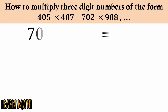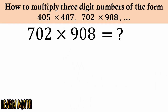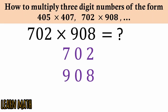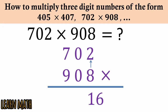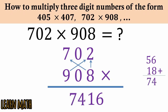The third example is 702 multiplied by 908: 8 into 2 is 16, then 7 into 8 is 56 and 9 into 2 is 18, giving 74. Write 74 here. And 9 into 7 is 63 — so 637416 is the answer.